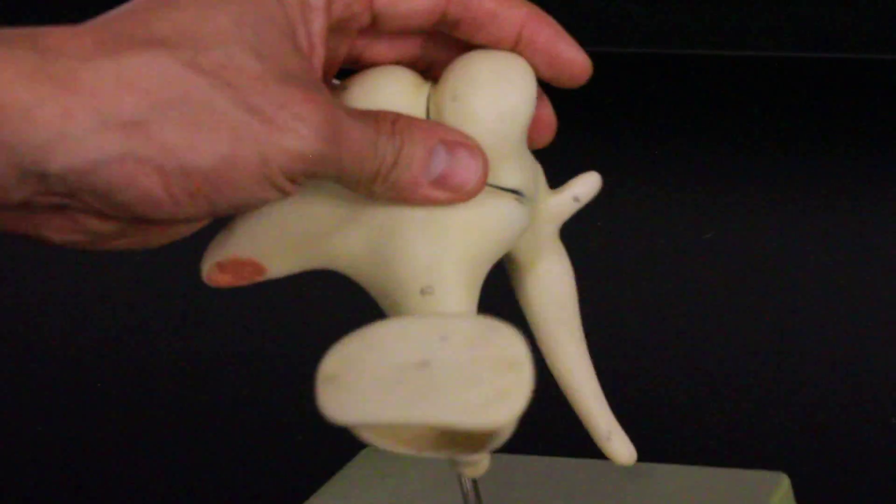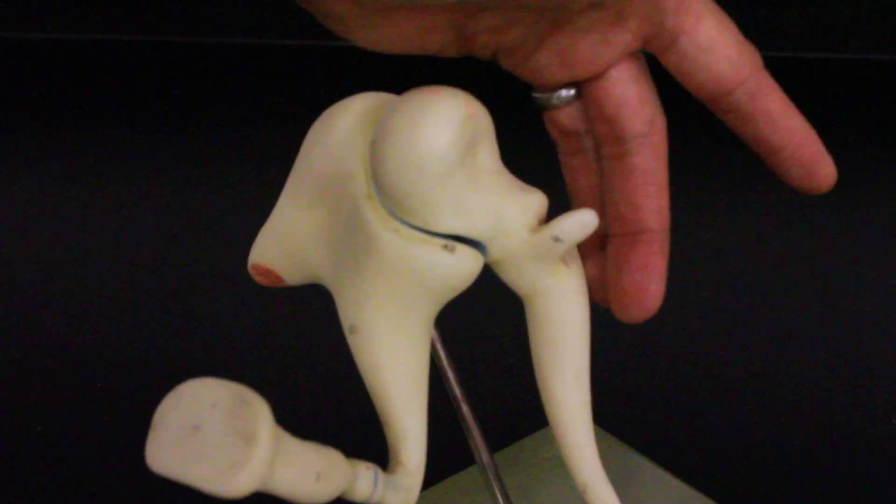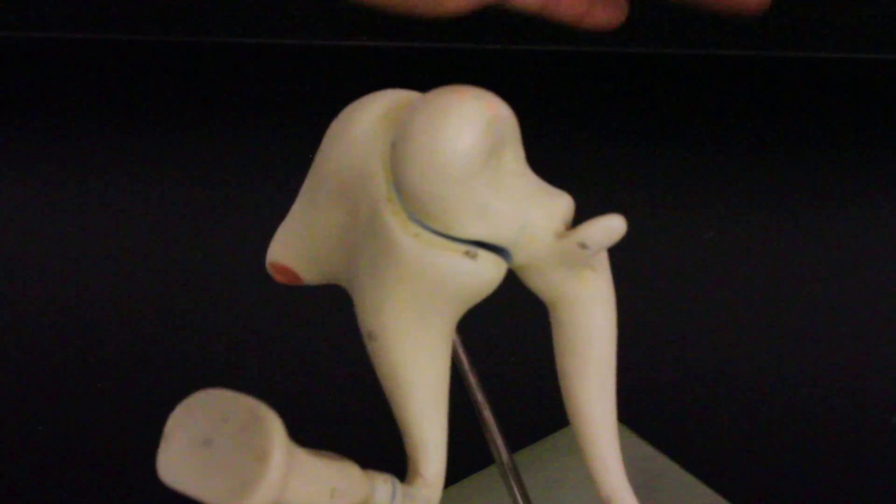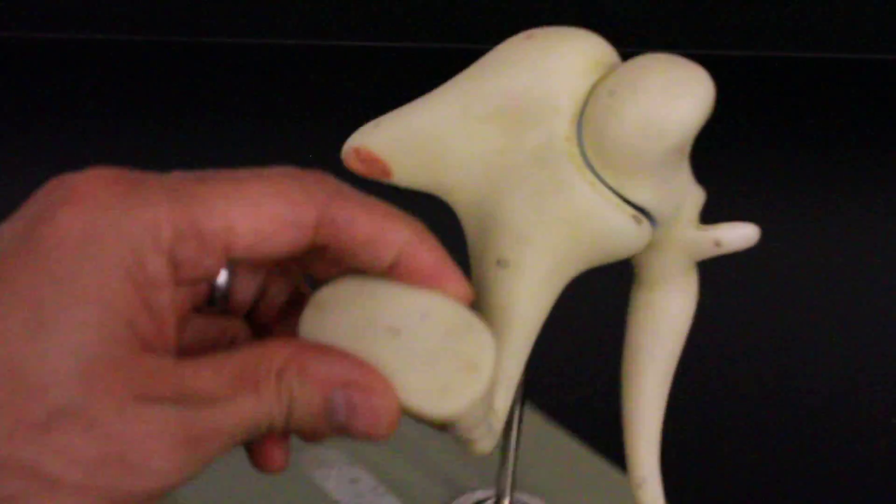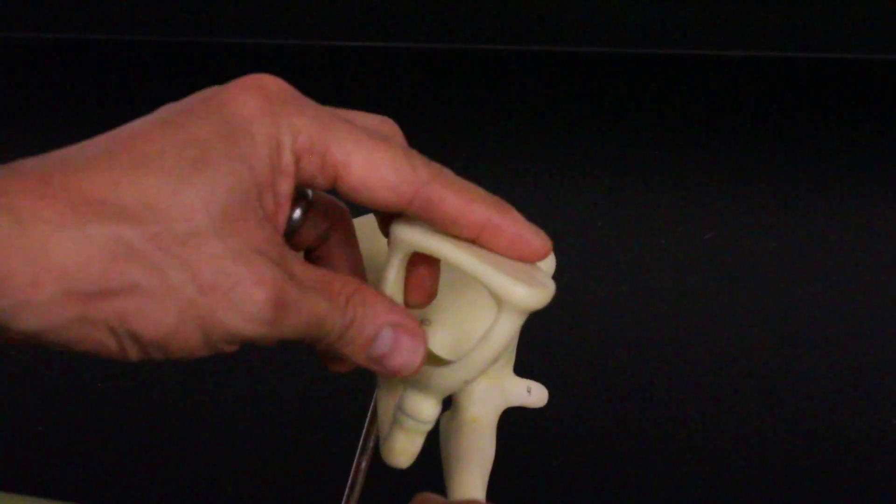So all three of these bones, tympanic membrane will start against and attach to the malleus also known as the hammer, incus also known as the anvil, and then the stapes also known as stirrups. As you can kind of see it looks like a cowboy stirrup.